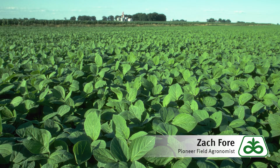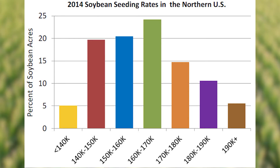What the research shows is that we want to get about 140,000 plants per acre established. To get 140,000 plants per acre, we have to seed higher than that. Generally, we're going to account for around 10% of seeds that don't germinate — around a 90% germination rate. So if we take 10% off, we add 14,000 more, which gives us a seeding rate of 154,000.